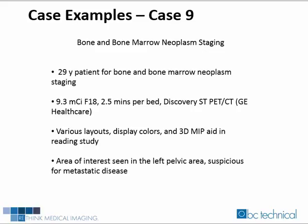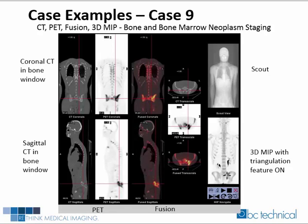The last case is the case of a 29-year-old patient referred for bone and bone marrow neoplasm staging. The injected dose was 9.3 mCi of F-18. Approximately 45 minutes after injection, the patient was scanned using a GE Discovery ST scanner at 2.5 minutes per bed position in 2D mode. The three-plane overview with CT, PET, and fusion of the patient's torso shows abnormal uptake apparent in the left pelvic area. The 3D MIP in the lower right also triangulates to the area of interest.